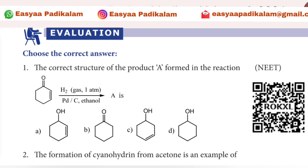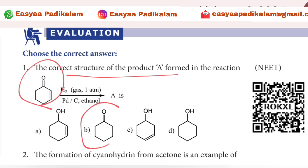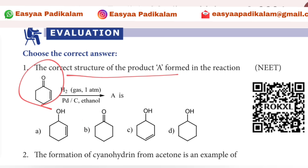First question: the correct structure of the product is A. Look at the diagram. You will see double bond O. Here we have a double bond O. If you have a single bond, we will answer it. If you have double bond O, you will have double bond O. So we will choose the answer — our answer is B.